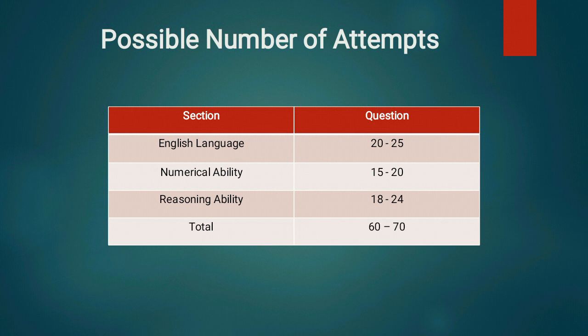RBI Assistant के preliminary exam के cut-offs हमेशा 60 से ऊपर रहे हैं। Paper आसान हो तो 65-70 attempts भी हो सकते हैं, paper difficult हो तो 60 attempts के आसपास तक सारा वक्त खत्म हो जाएगा। आपकी दोस्त का paper आसान गया और उसने 70 attempts किए — उसे देखकर आप 70 attempts करने मत जाइए। Honestly जितना आ रहा है उस हिसाब से करो — 60 attempts से भी आप next round में जाने का बड़ा possibility रखते हो।